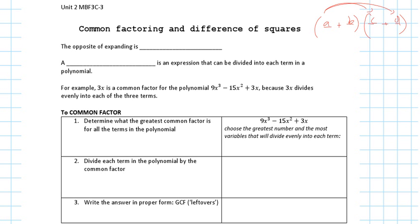Today we're going to do exactly the opposite of that. We're going to learn how to go from something expanded to something factored. So we're working backwards today from what we learned yesterday — we have to always find our way back home. The process is called factoring. The opposite of expanding is factoring.